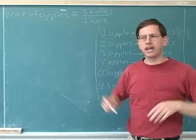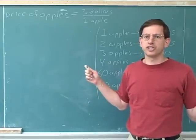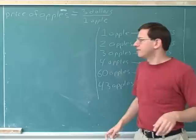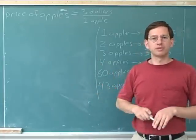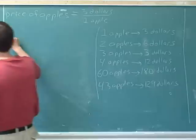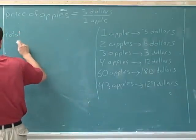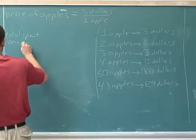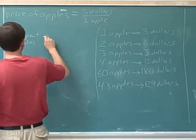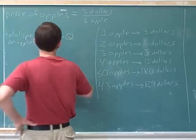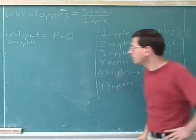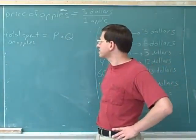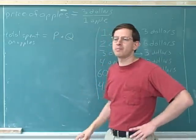How would we take what we've already talked about and make it into an algebraic equation? How can we write an algebraic equation about the price of apples, the quantity of apples, and the total amount you spend on apples? Well, the equation would be that the total spent on apples equals P times Q — the price times the quantity. The total spent on apples equals the price times the quantity of apples.